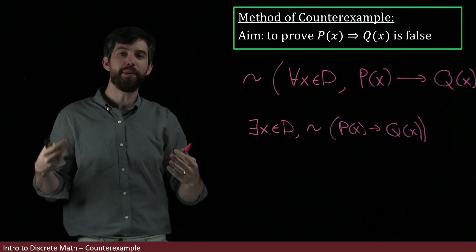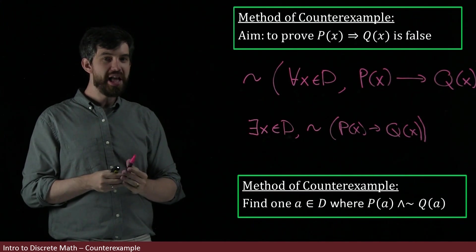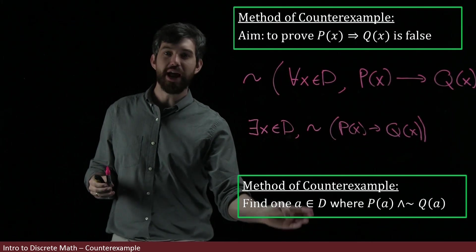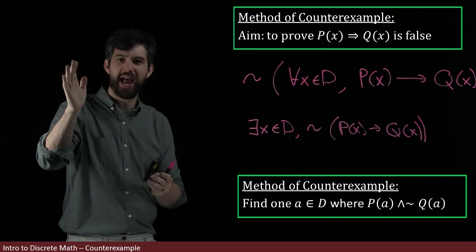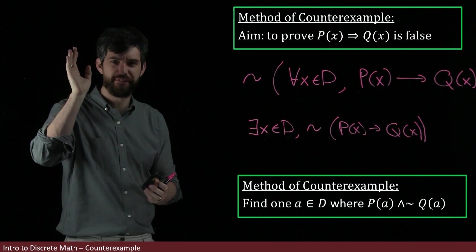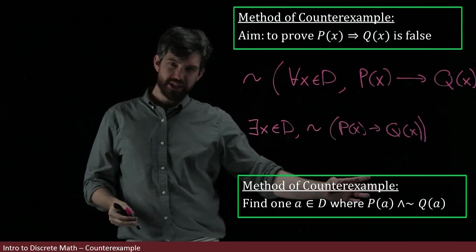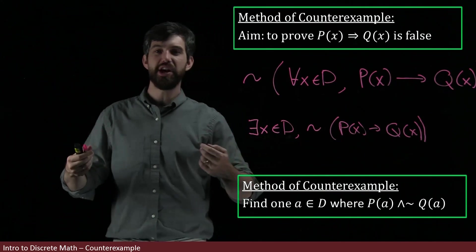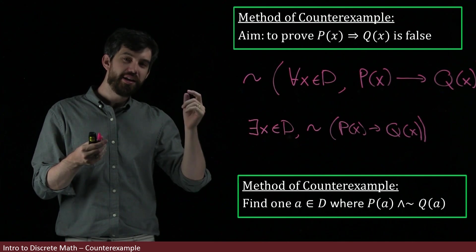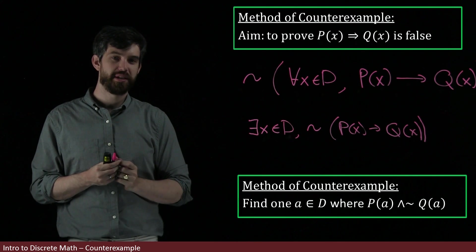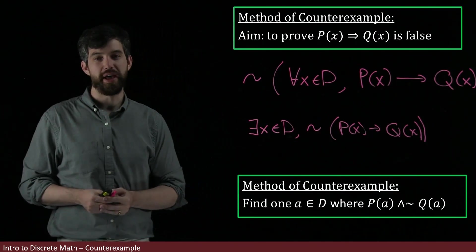And so I'm going to summarize my method of counterexample in this way. I am finding some particular element in my domain. And I sometimes like to call it a when it's like an actual chosen element. There exists one and I found it and I give it the name a. And it means that when I plug it into my predicates, I want a scenario where my P is true, but my Q is going to be false. And so in other words, I have this conjunction of P of a and not Q of a.